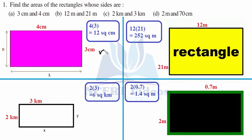Now here we have 12 meter and 21 meter. We will take length as 12 meter and breadth as 21 meter. When you multiply it, it is 252 square meter.